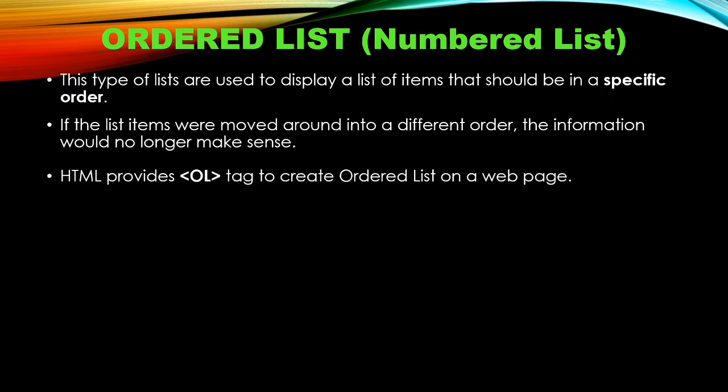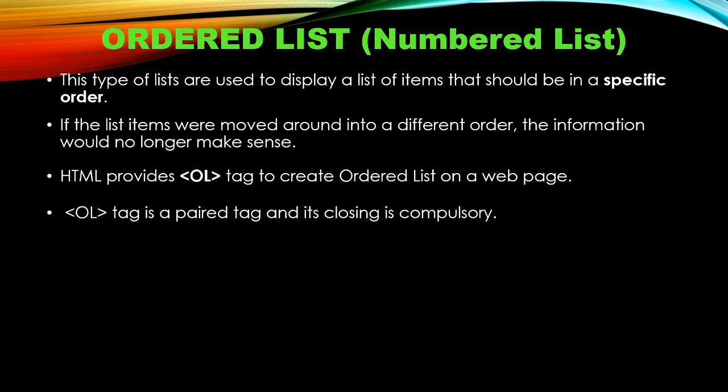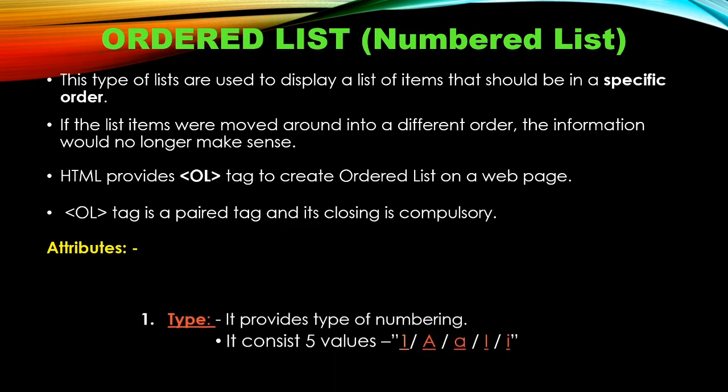To create an ordered list or numbered list, HTML provides the ol tag. This ol stands for ordered list and is a paired tag, so its closing tag is compulsory. The ol tag has three main attributes.